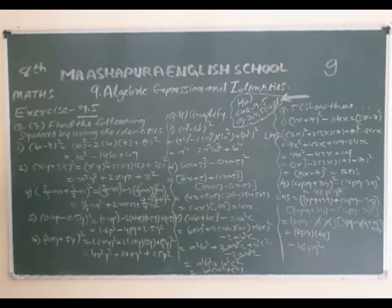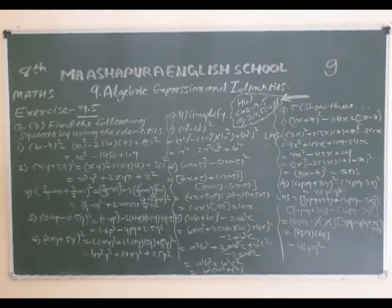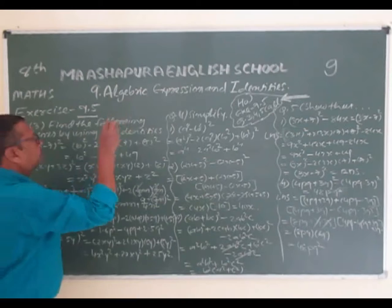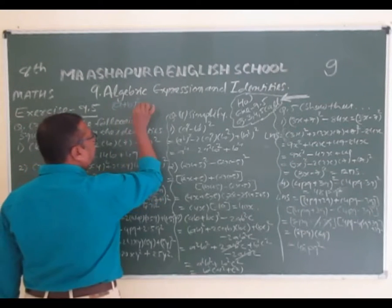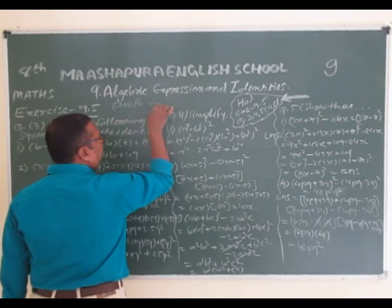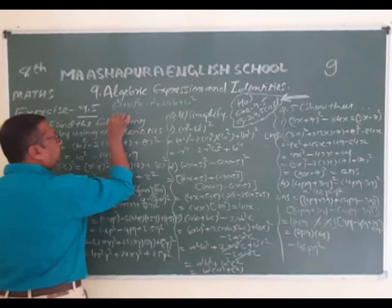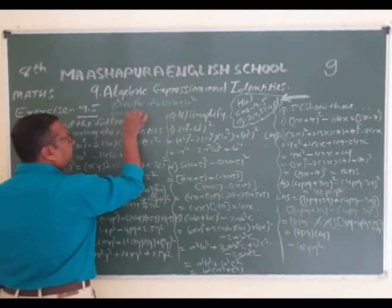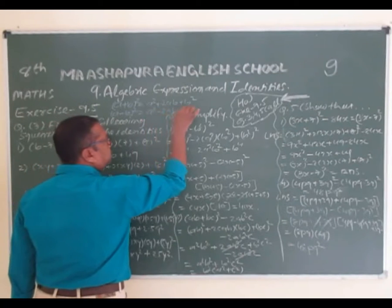Exercise 9.5, question number 3: Find the following squares by using the identities. Here we have 2 identities. The first identity is (a + b)² = a² + 2ab + b². The second identity is (a - b)² = a² - 2ab + b².